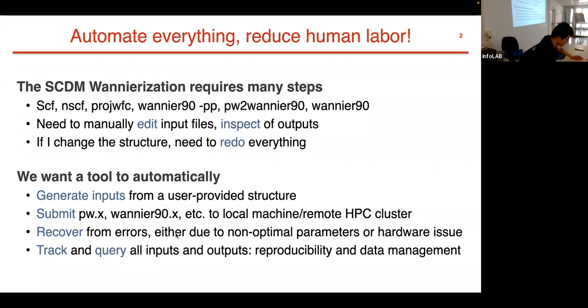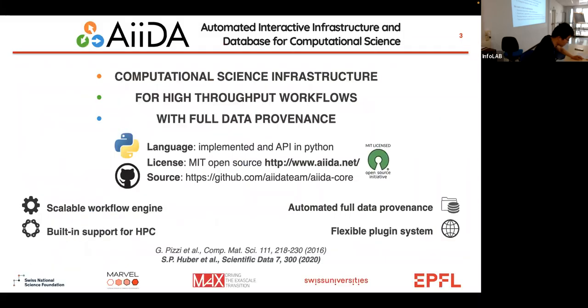AiiDA is the tool to come to rescue. AiiDA is Automated Interactive Infrastructure and Database for computational science. Essentially it is a computational science infrastructure for high throughput workflows with full data provenance. AiiDA itself is written in Python, it's easy to use, and it's MIT licensed. It's fully open source on GitHub so everyone can look at the source code, do pull requests and make it better.